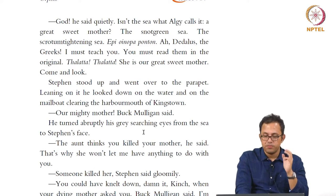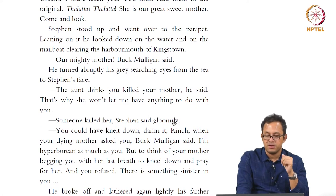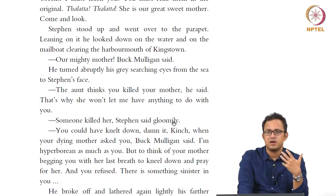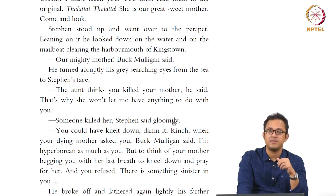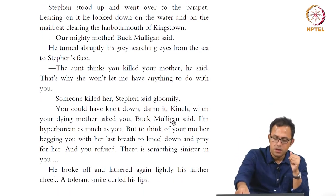"The aunt thinks you killed your mother," Mulligan said. "That is why she won't let me have anything to do with you." "Someone killed her," Stephen said gloomily. "You could have knelt down, damn it, Kinch, when your dying mother asked you." Buck Mulligan said: "I am hyperborean as much as you, but I think of your mother begging you with her last breath to kneel down and pray for her, and you refused. There is something sinister in you." We get this backstory: Stephen suffers continual guilt and remorse because he had not prayed for his mother on her deathbed when she implored him to. He refused, and this refusal becomes a permanent marker of guilt and trauma.